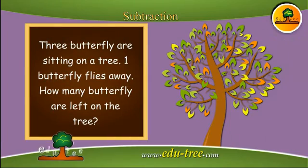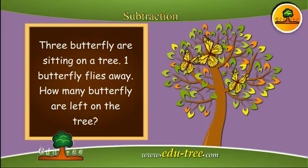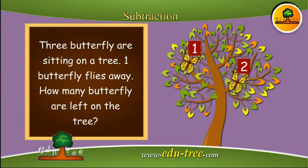Three butterflies are sitting on a tree. One butterfly flies away. How many butterflies are left on the tree? Let us apply subtraction: three minus one is equal to two. Therefore, only two butterflies are sitting on the tree.